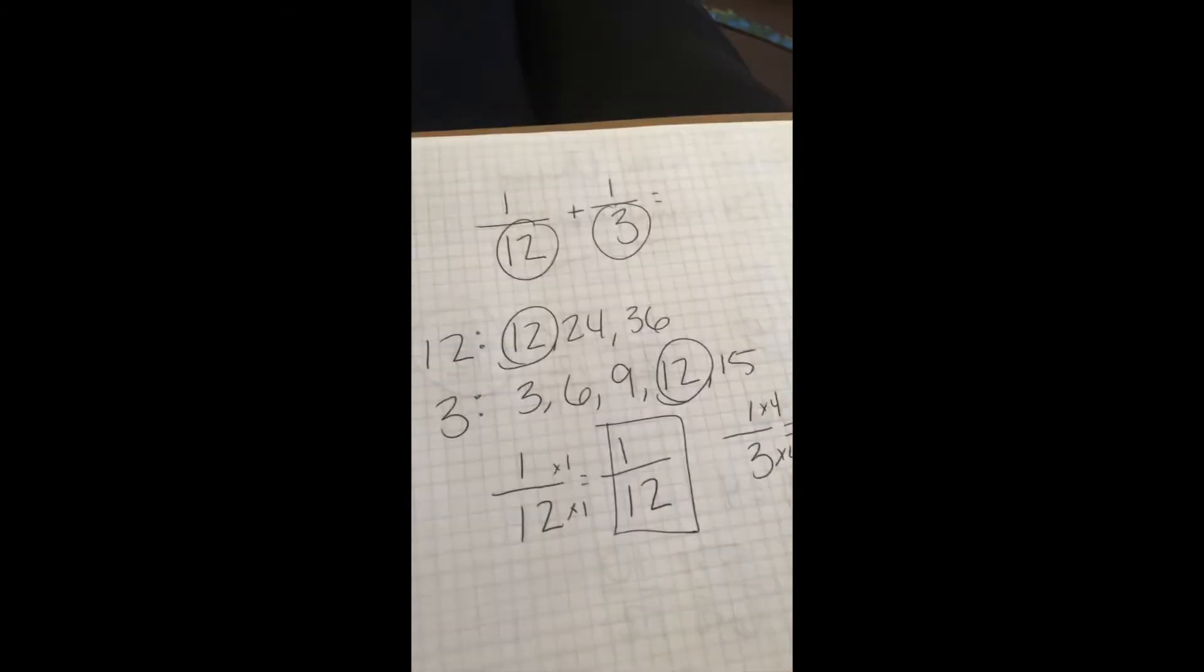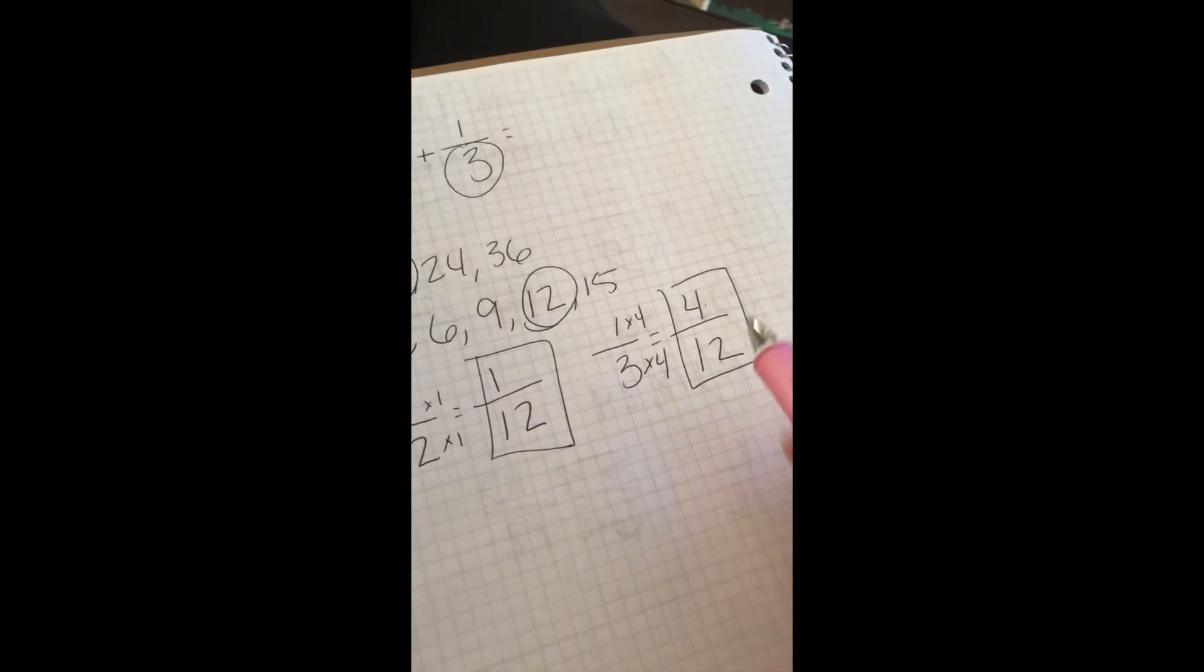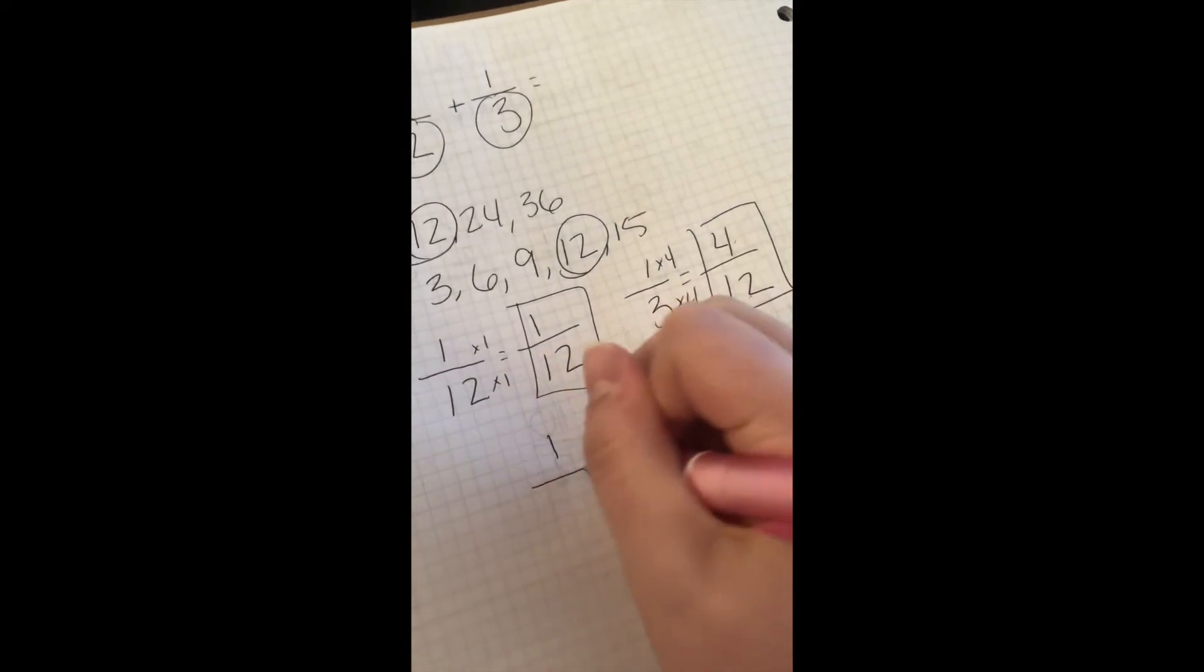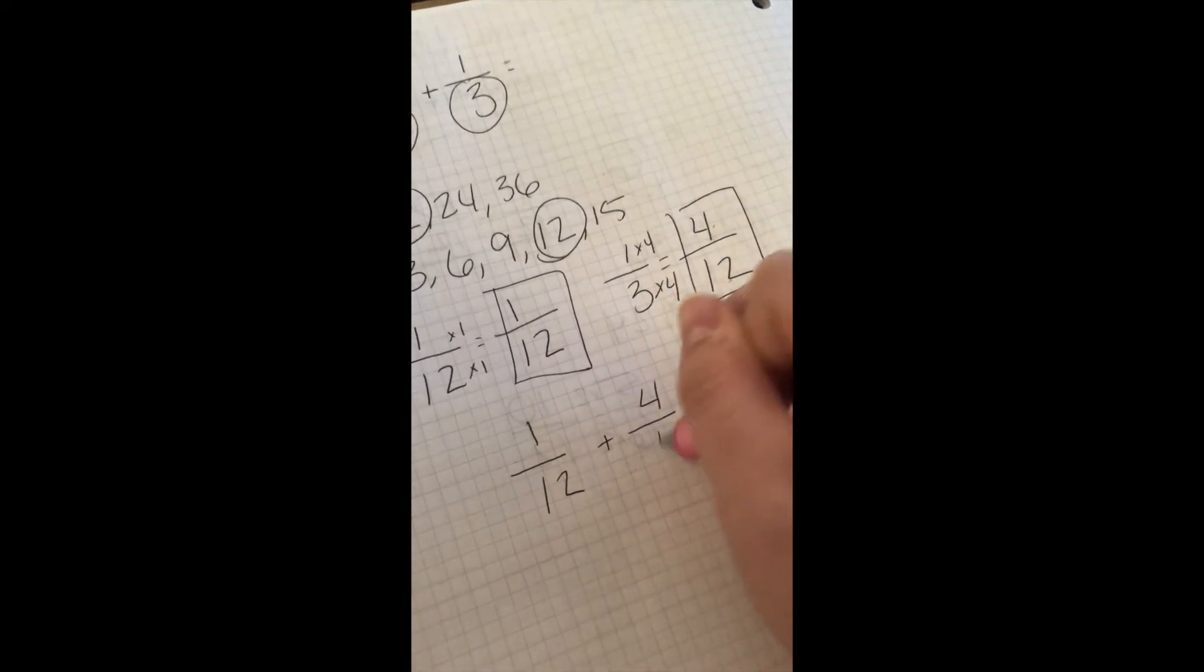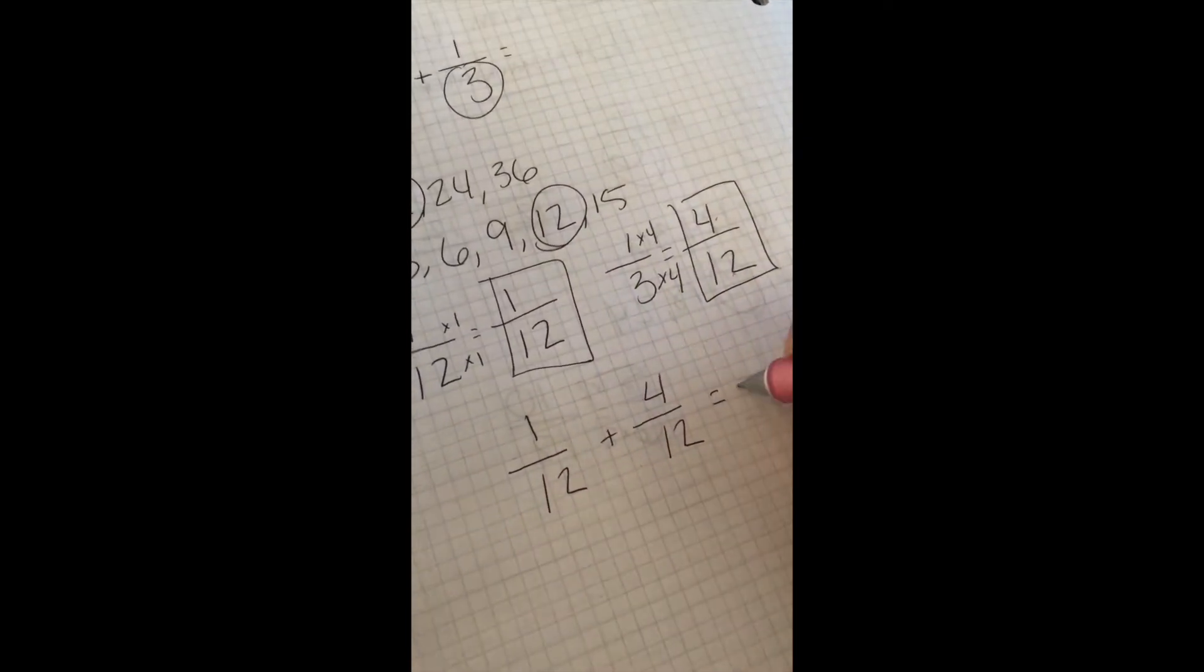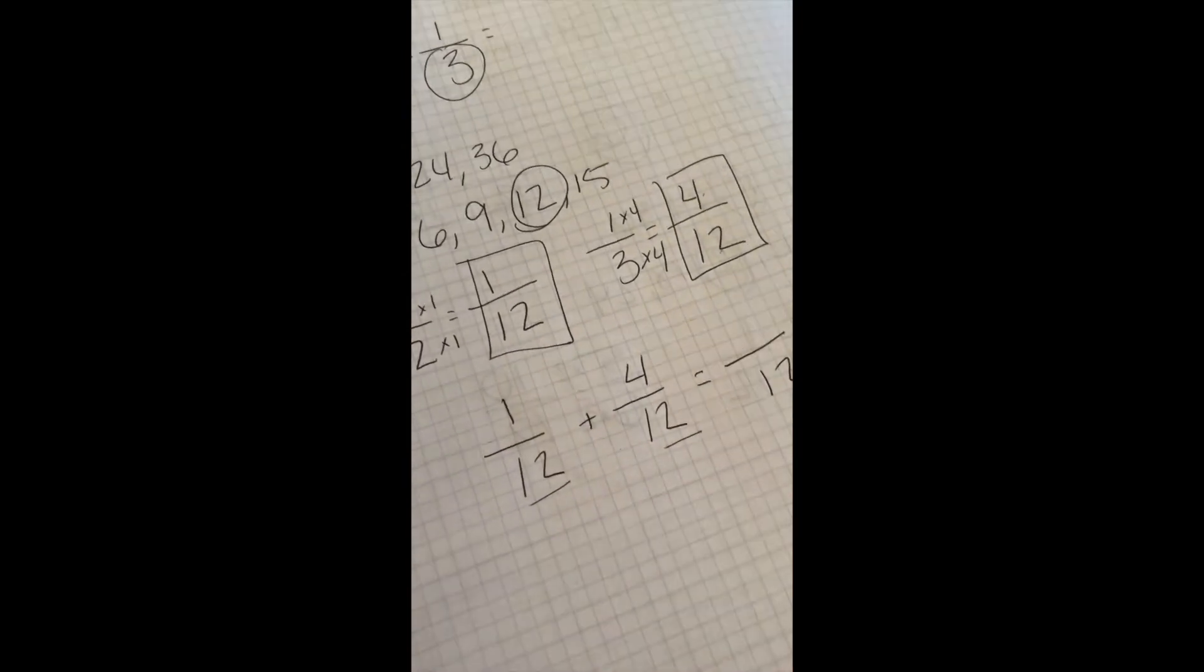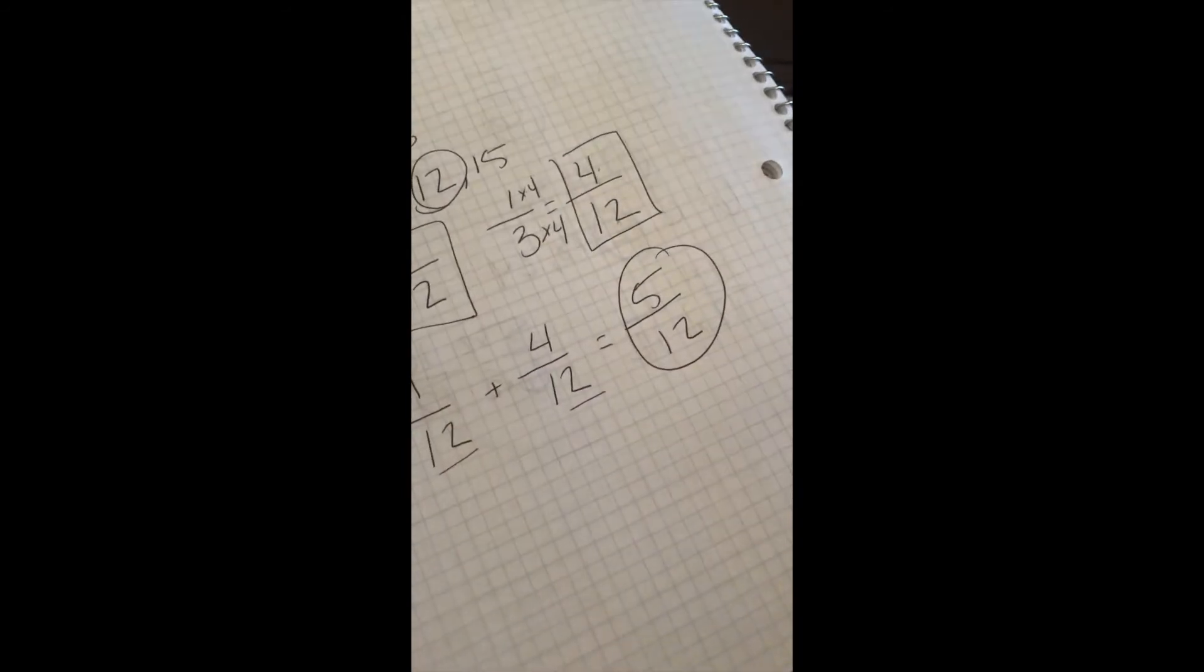So now, I used to have 1 twelfth plus 1 third, but I know 1 third is the same as 4 twelfths, and I can add those together because the denominator is the same. So I would do 1 twelfth plus 4 twelfths. It's going to equal, the denominator will stay 12, because it's the same. And then 1 plus 4 is simple, which is 5. So my answer would be 5 twelfths.